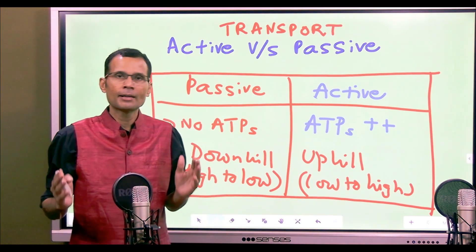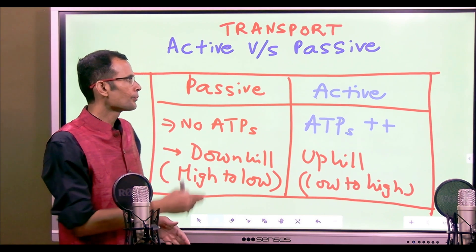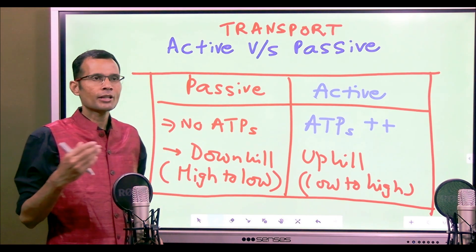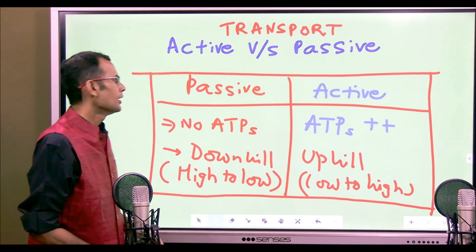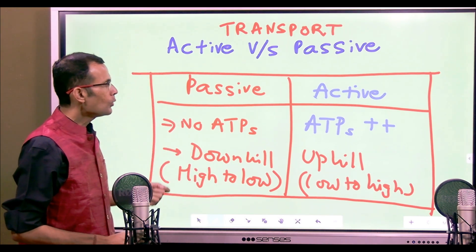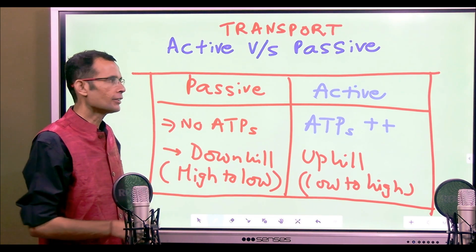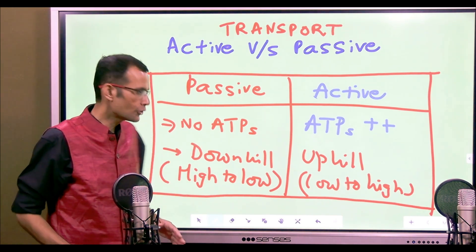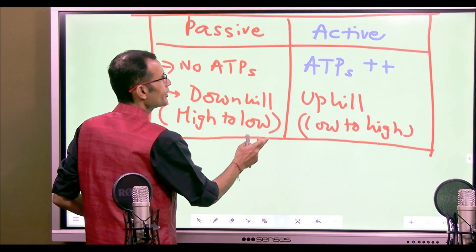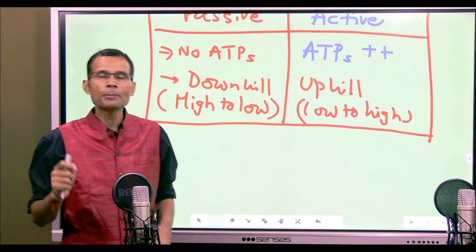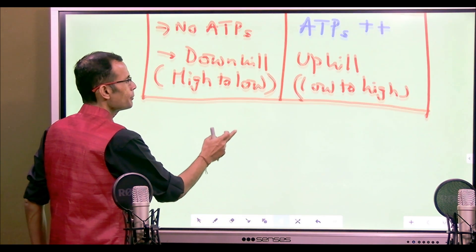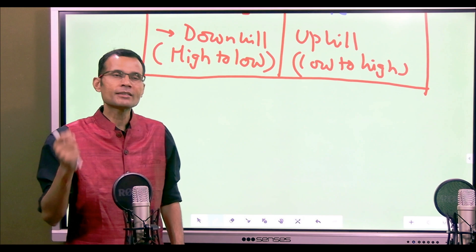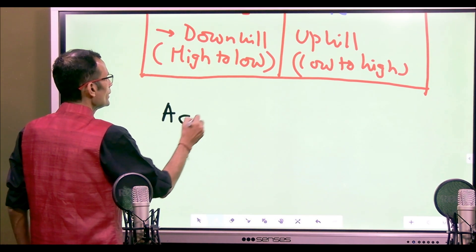Examples: passive transport — diffusion; active transport — the sodium-potassium pump as primary active transport, or secondary active transports like SGLT, sodium-glucose transporters. Now let's dig deeper into active transports. We mentioned that ATPs are consumed, but we need to understand more about this ATP consumption. Active transport is basically of two types based on how and where the ATPs are consumed.